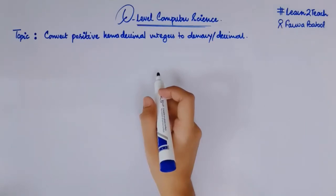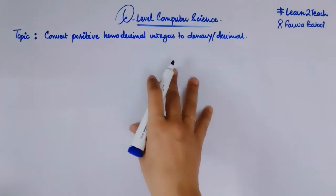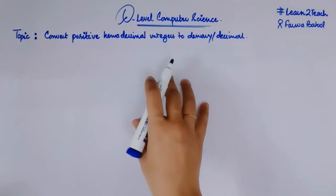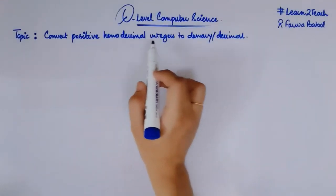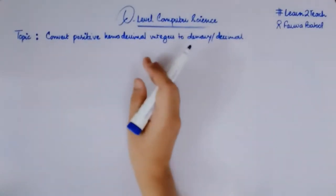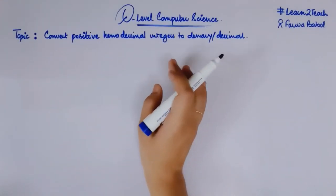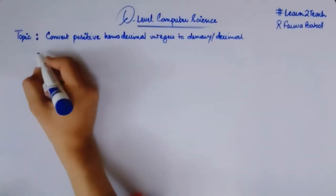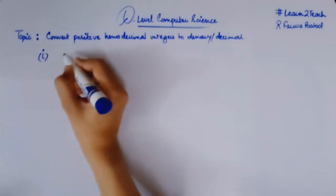Hello everyone, this is your instructor Farwa Batool and welcome to the course of O-level computer science. We are starting the topic of hexadecimals and in this video I am going to tell you the conversion — how you can convert a positive hexadecimal integer into a denary or a decimal one. I am going to take an example from the book and then another example from past papers. Let's move into it. My first example is from your book, Computer Science 2210.